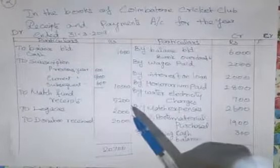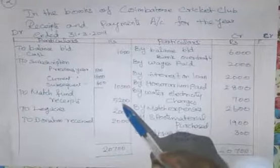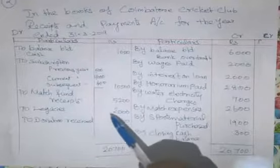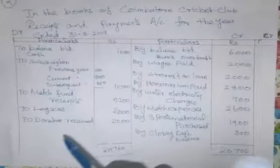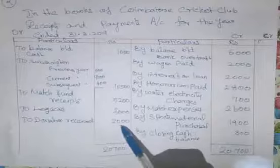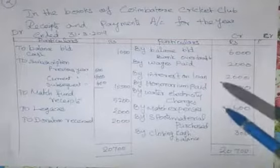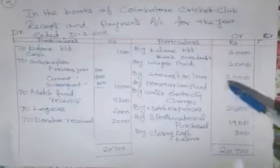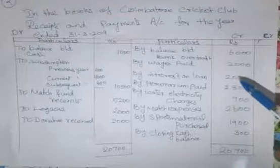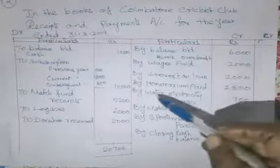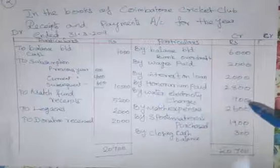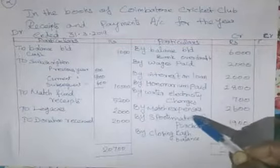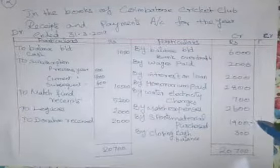Match fund receipt Rs. 5,200. Legacies received Rs. 2,000 — it is a capital receipt, so entered on the receipts side of Receipts and Payments Account. Donation receipt Rs. 2,000. Wages paid for ground maintenance Rs. 2,000. Interest on loan Rs. 2,000 — that is an expenditure. Honorarium paid — also expenditure. Water and electricity charges Rs. 700 — expenses, payments side. Match expenses — payments side. Sports material purchased Rs. 1,900.